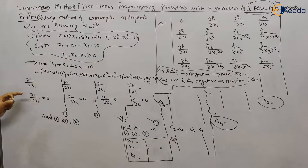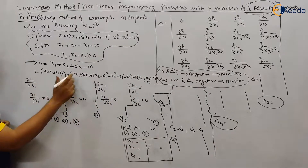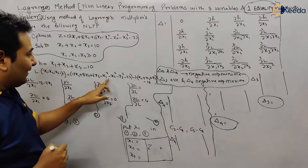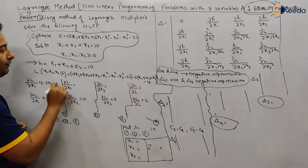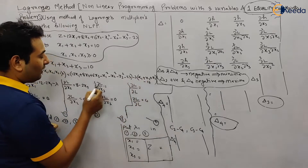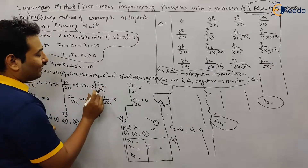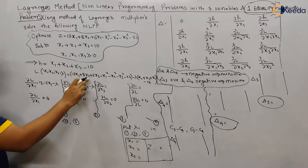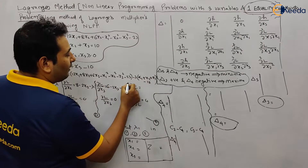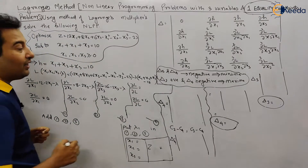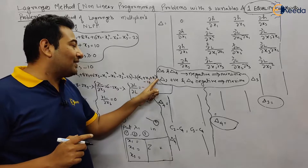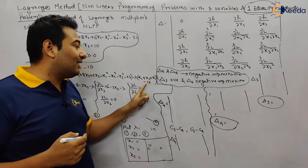Let us find the partial derivatives. ∂L/∂x1: differentiating with respect to x1 gives 12 minus 2x1 minus lambda. ∂L/∂x2: differentiating with respect to x2 gives 8 minus 2x2 minus lambda. ∂L/∂x3: differentiating with respect to x3 gives 6 minus 2x3 minus lambda. Finally, ∂L/∂λ: the derivative of the lambda term is the constraint itself, giving minus x1 minus x2 minus x3 plus 10.